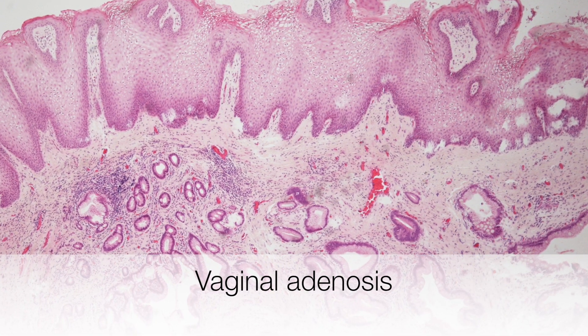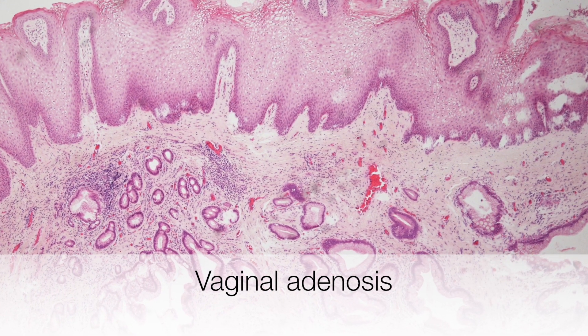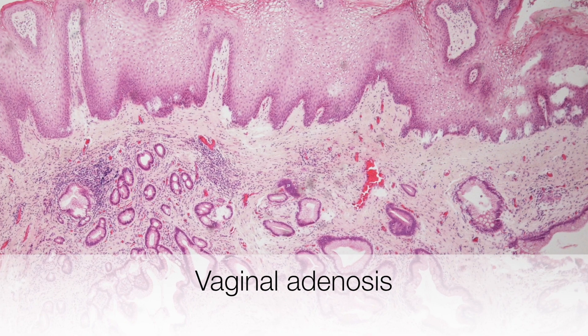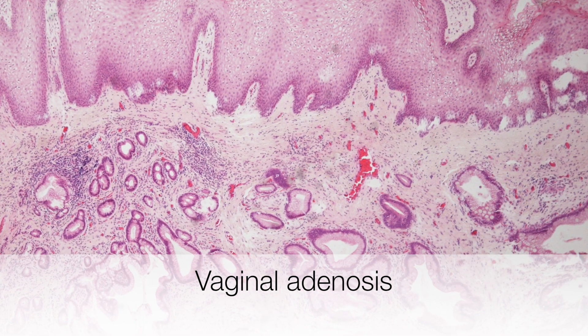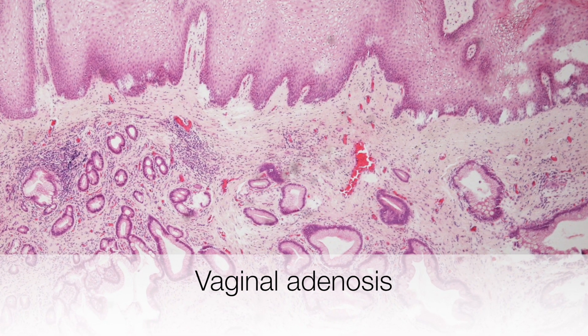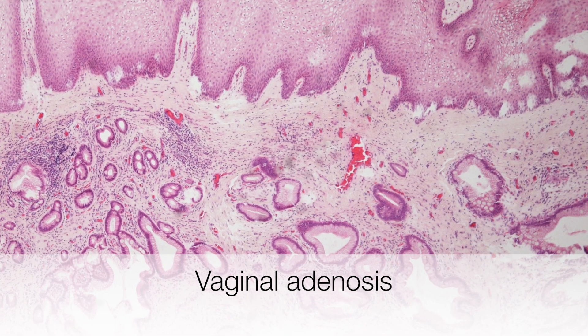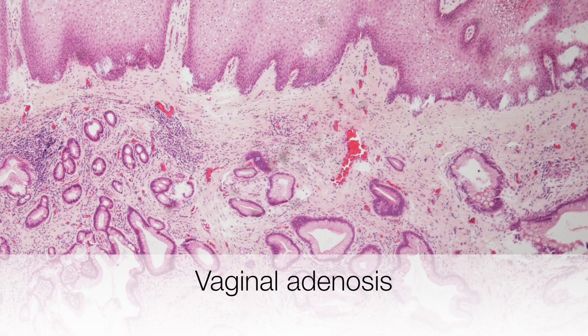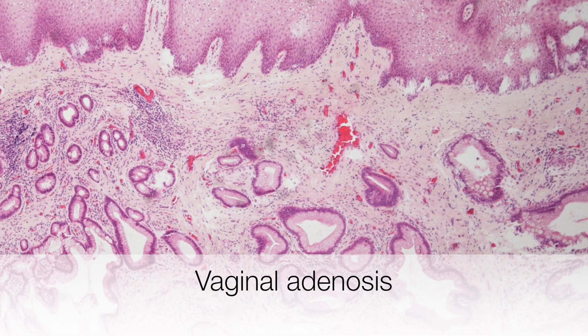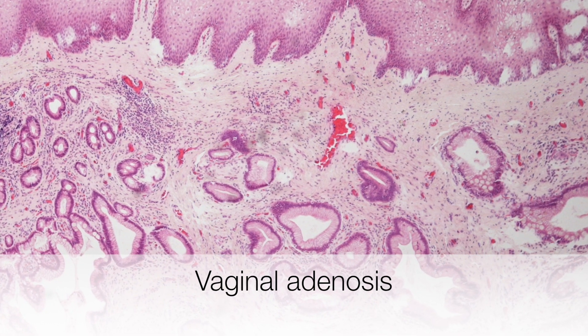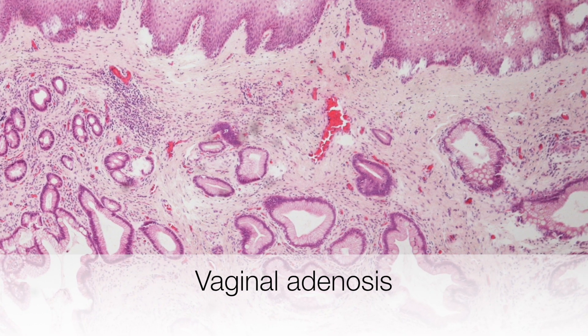Finally, this is an example of vaginal adenosis, which is the proliferation of benign glands beneath the stratified squamous epithelium of the vagina.